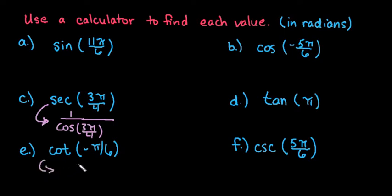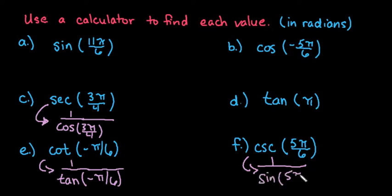Cotangent, remember, is the reciprocal of tangent, so we would have to plug this into our calculator as 1 over tangent negative pi over 6. And then cosecant, remember, is 1 over sine, so we would have to plug this in as 1 over sine 5 pi over 6.